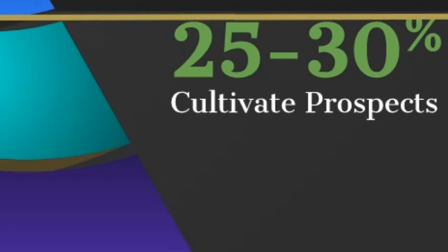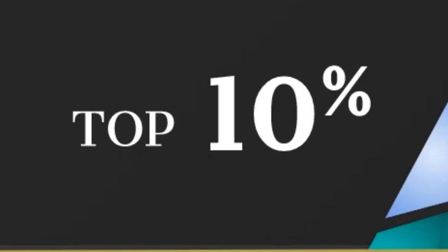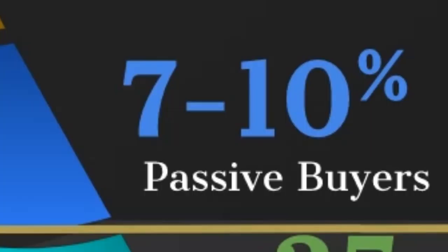As we move to the top 10%, the next stage is called the passive stage. These are people that know they have a need but aren't proactively searching for options — that's why it's called the passive stage. They need to be value-indoctrinated by you. They know they have some kind of shift happening in their life and they want to change it. That's the 7% to 10%.